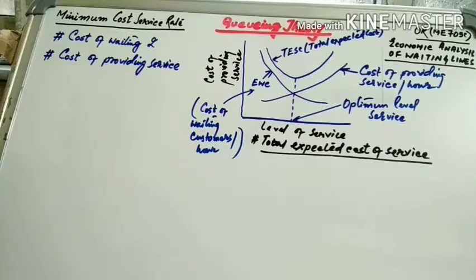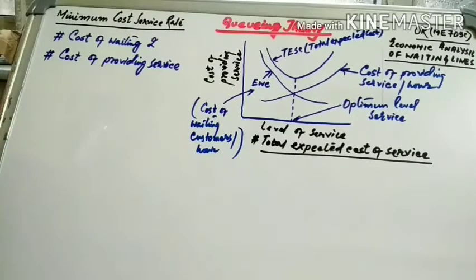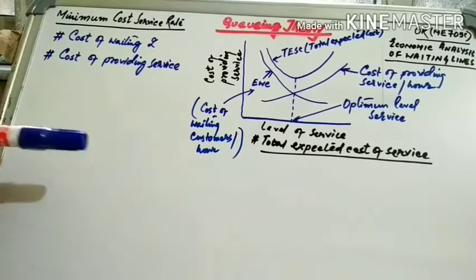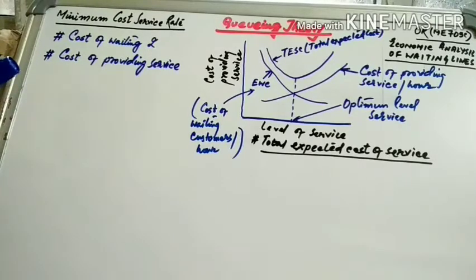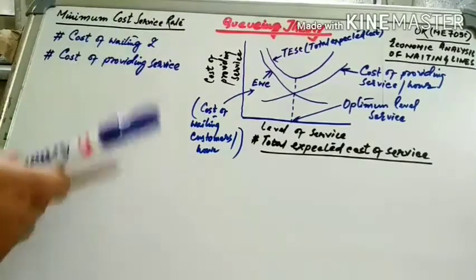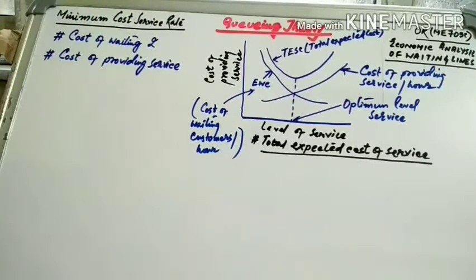The waiting time cost generally includes the cost of lost business, because people may go somewhere else. As in a restaurant with a long queue where service is slow or space is limited, customers leave without waiting for service or do not come back again — that is the cost of waiting.